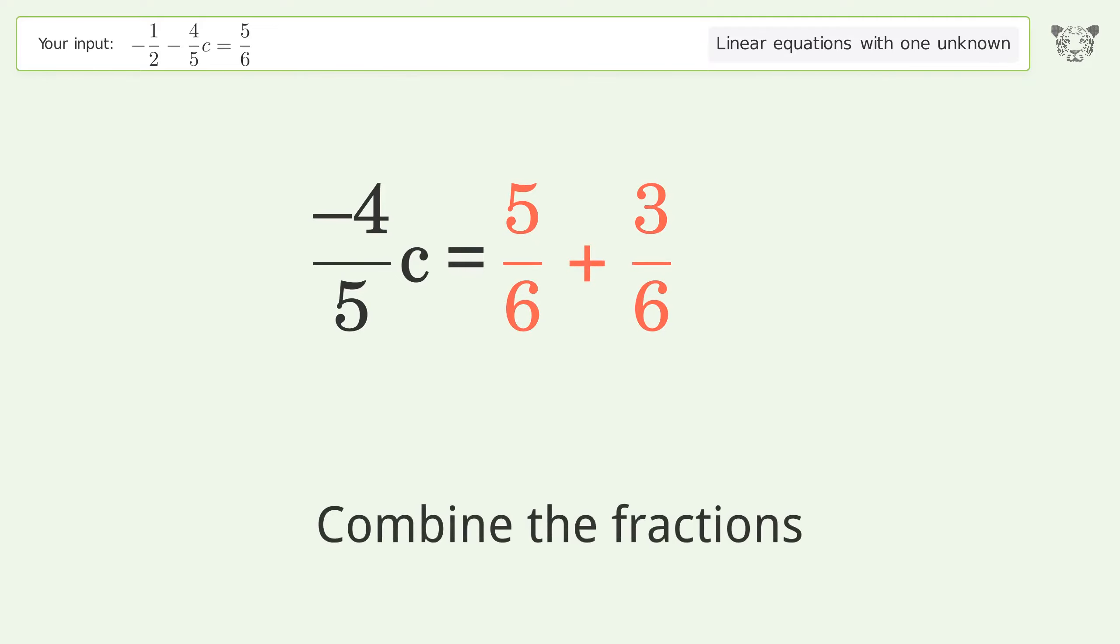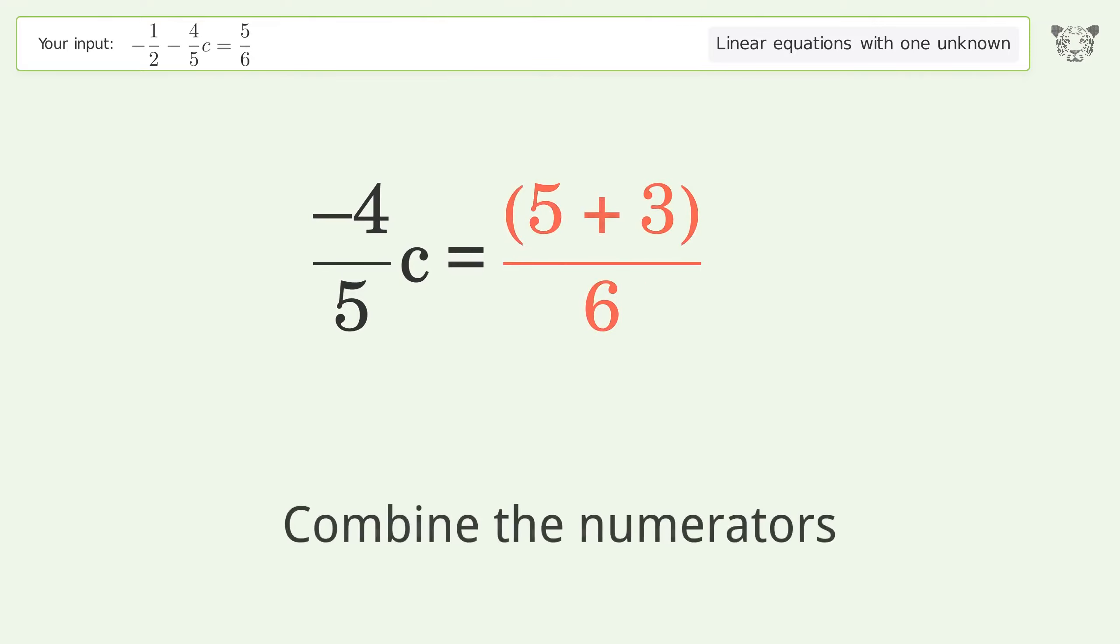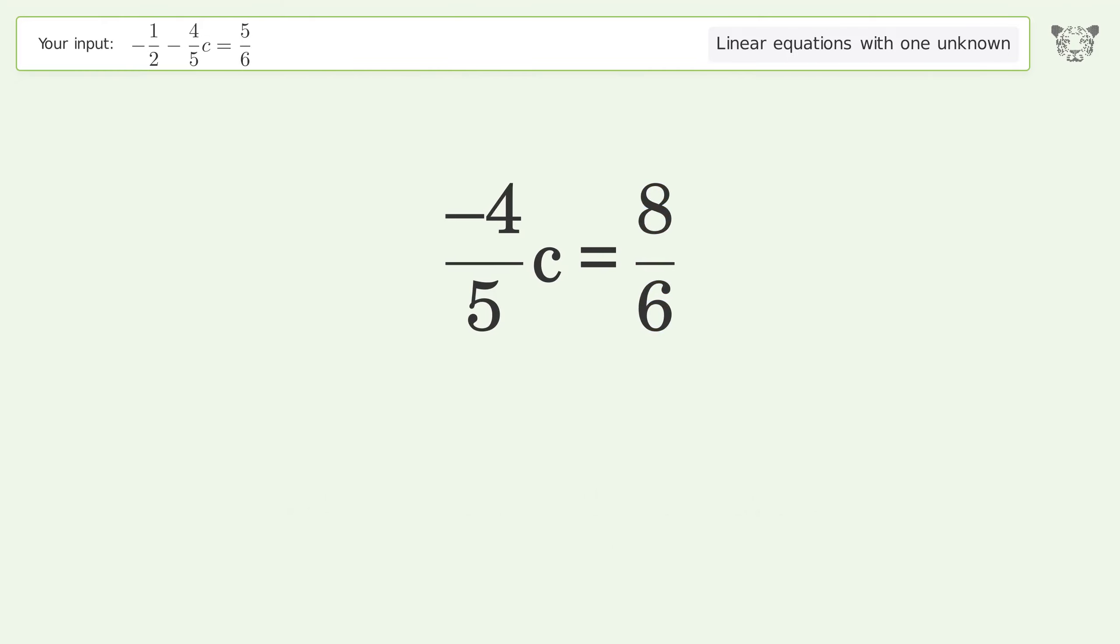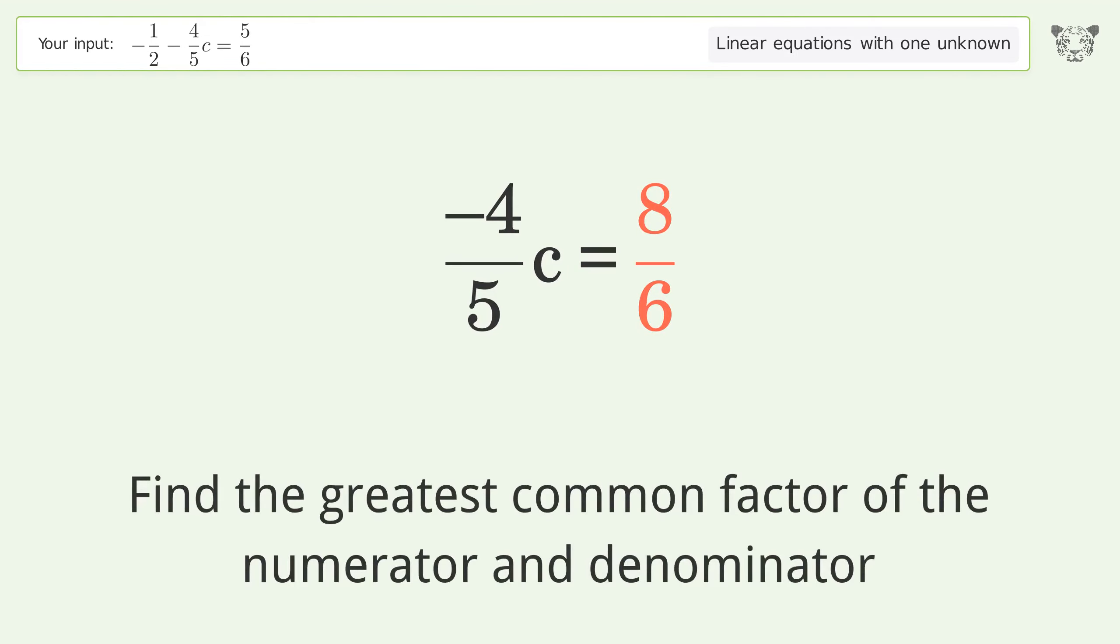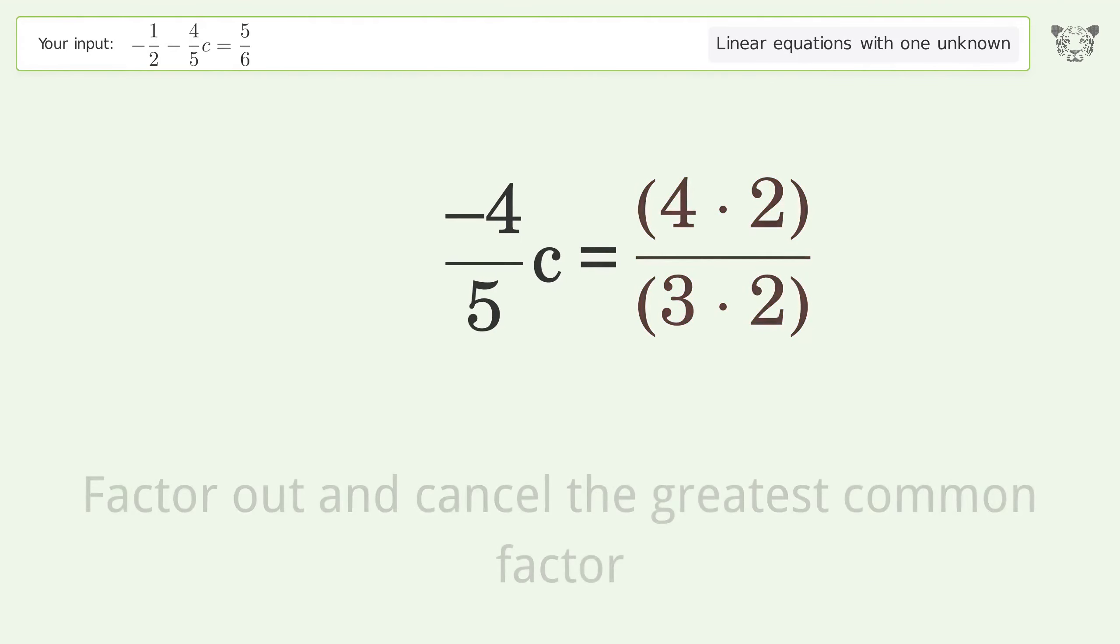Combine the fractions and combine the numerators. Find the greatest common factor of the numerator and denominator, then factor out and cancel the greatest common factor.